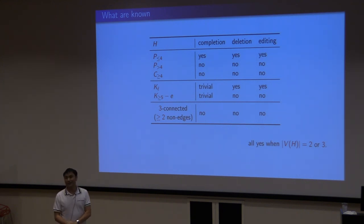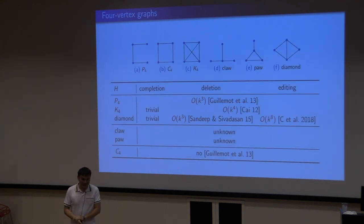The last line is about another kind of strange condition: 3-connected and with at least 2 non-edges. If you combine these last 3 lines, you will see, basically it answers all the questions about 3-connected. Because if you have only 1 non-edge, that's K minus E. If you have no non-edge, that's a clique. So basically, all 3-connected cases are solved. In particular, we know all the answers when the H has 2 vertices or 3 vertices. So the next step is 4.